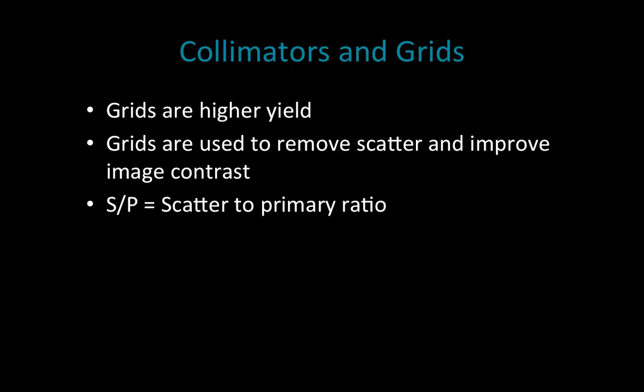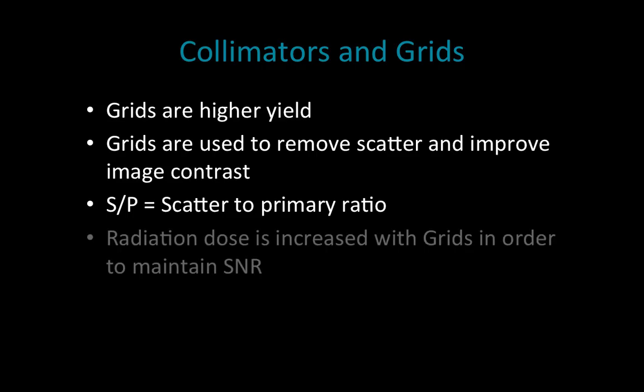Different from filters, grids are placed behind the patient — so the x-ray has already gone through the patient, and before reaching the image detector, the grid is there to block any photon that has deviated from its primary path, namely scatter. The scatter-to-primary ratio is a metric we'll see is very important for image contrast in a moment.